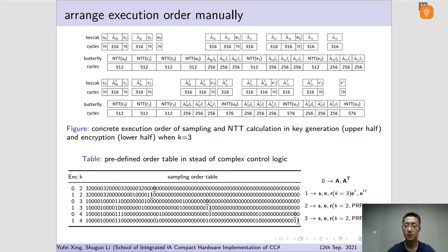Within the table, there are four kinds of sampling. Namely, public matrix element polynomial sampling represented with four consecutive zeros. And noise polynomial when eta equals 2 is represented with figure 1. Noise polynomial sampling when eta equals 3 is represented with a pair of 2 and 3, implying two PRF functions should be invoked sequentially.